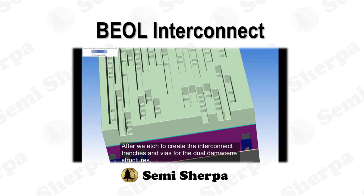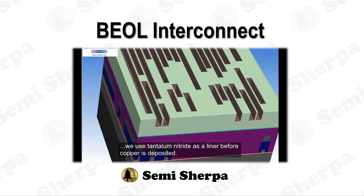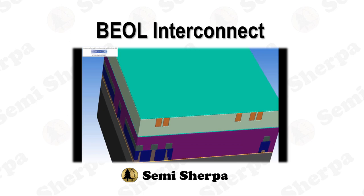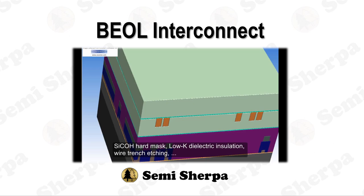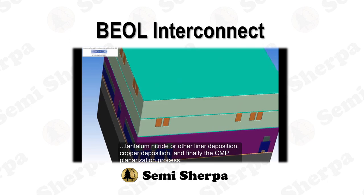In this episode, we're charting a course through key territories, including the rich history of interconnects, the art of aluminum metallization, the science behind tungsten vias, and the magic of silicide technology. In our next episode, we'll dive deeper, exploring electroplating technology, copper interconnects, and the future of copper technology. So fasten your seatbelts — are you ready to dive headfirst into the world of interconnects? Let's ignite our engines and launch this adventure together.